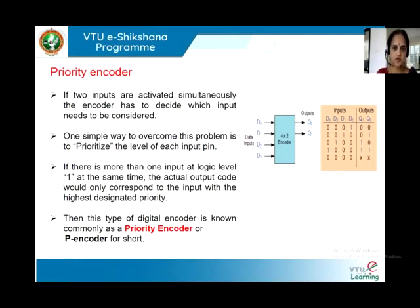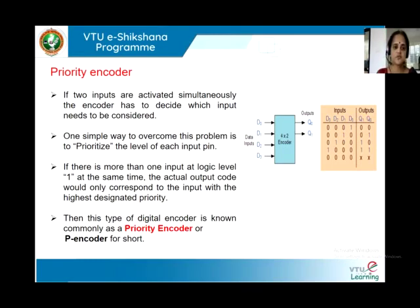Let us see the working of a priority encoder. If two or more inputs are activated simultaneously, the encoder has to decide which input needs to be considered. One simple way to overcome this problem is to prioritize the level of the input, and to address this, the priority encoder has been designed.